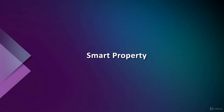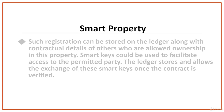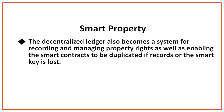Then there's Smart Property. Tangible or intangible property, such as cars, houses, cookers, patents, property titles, or company shares, can have smart technology embedded in them. Such registration can be stored on the ledger along with contractual details of others who are allowed ownership of the property. Smart keys could be used to facilitate access to the permitted party, and the ledger stores and allows the exchange of these smart keys once the contract is verified. The decentralized ledger also becomes a system for recording and managing property rights, as well as enabling smart contracts to be duplicated if records or the smart key is lost.